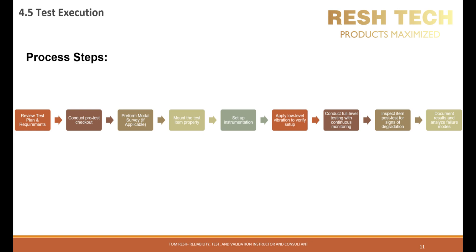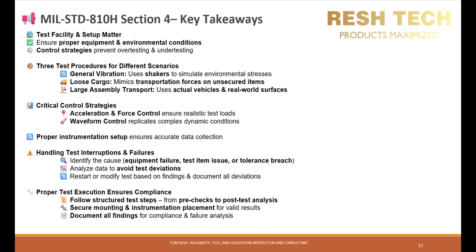Document results and analyze failure modes. The key takeaways from this lecture are that test facility and setup matter — ensure proper equipment and environmental conditions. You also need to ensure appropriate control strategies to prevent over-testing and under-testing. We covered three test procedures: Procedure 1 for general vibration uses shakers to simulate environmental stresses; Procedure 2, loose cargo, mimics transportation forces on unsecured items; and large assembly transport, which uses actual vehicles and real-world surfaces. We also covered critical control strategies including acceleration and force control, and waveform control which replicates complex dynamic conditions.